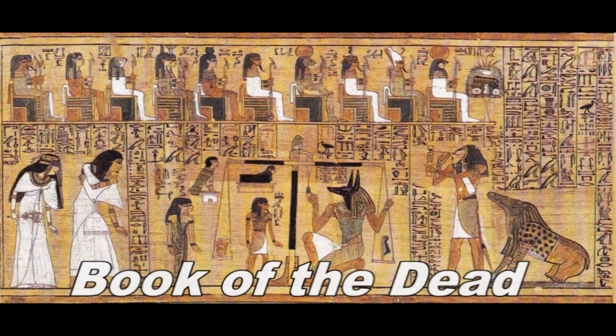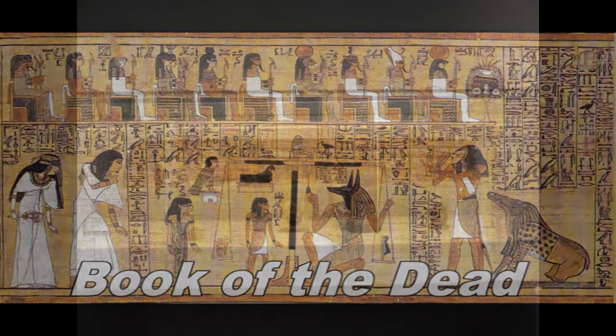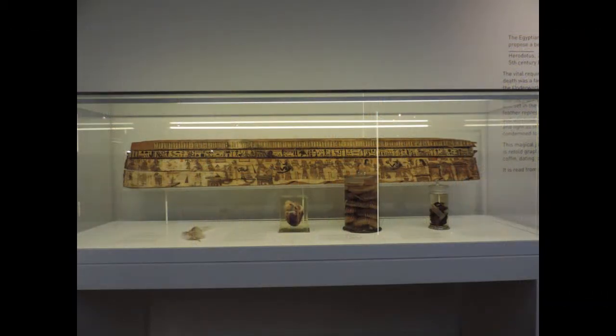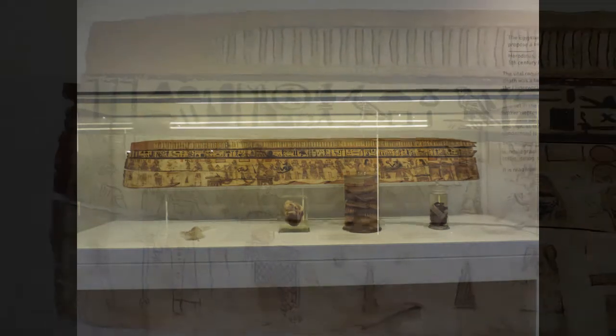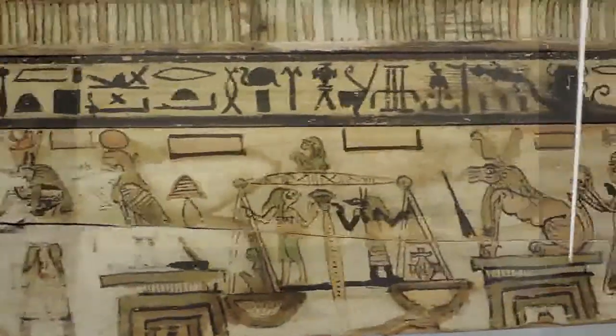Around this whole topic, the Book of the Dead pops up very often. Usually they refer to how, as you pass through judgment, your lies would be measured against the weight of the feather, and if there were too many lies, you couldn't pass through. But the Book of the Dead in itself has many other important aspects regarding weights and measures. Also, the Ten Commandments and those parts of the Bible can be seen to evolve directly from the Book of the Dead.